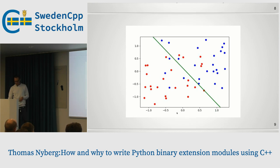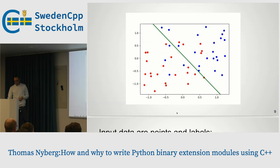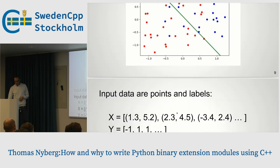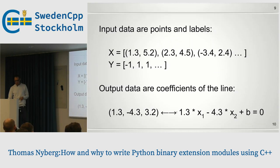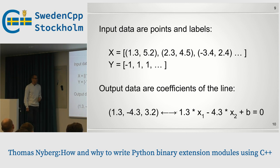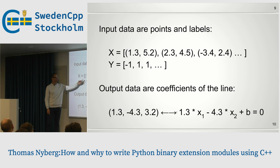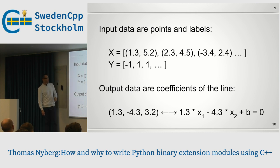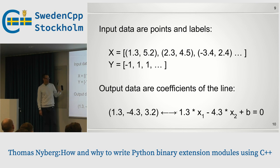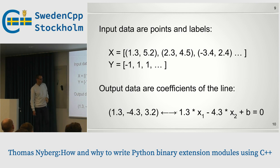Our input data are pairs of Cartesian coordinates x and y, something like 1.3, 5.2. We have labels which are minus one or one, corresponding to red and blue. We're basically looking at different coefficients that define a line in the plane, and we want to solve for the best ones.